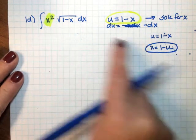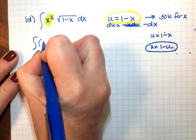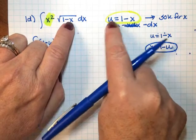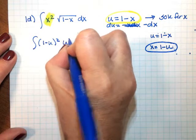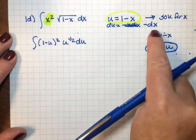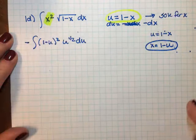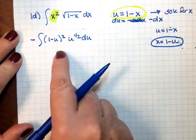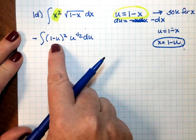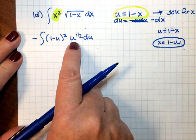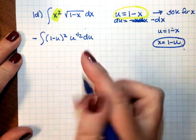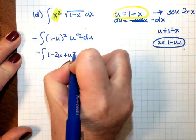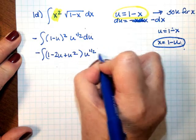When I replace my x with 1 minus u, that gets squared, times — I can replace 1 minus x with u, so that's just u to the 1 half times du. Remember, I do need to pull a negative sign out in front because I have a negative dx. Now before I can integrate, I am going to have to FOIL and then distribute. So I have 1 minus 2u plus u squared, and all of that is times u to the 1 half du.